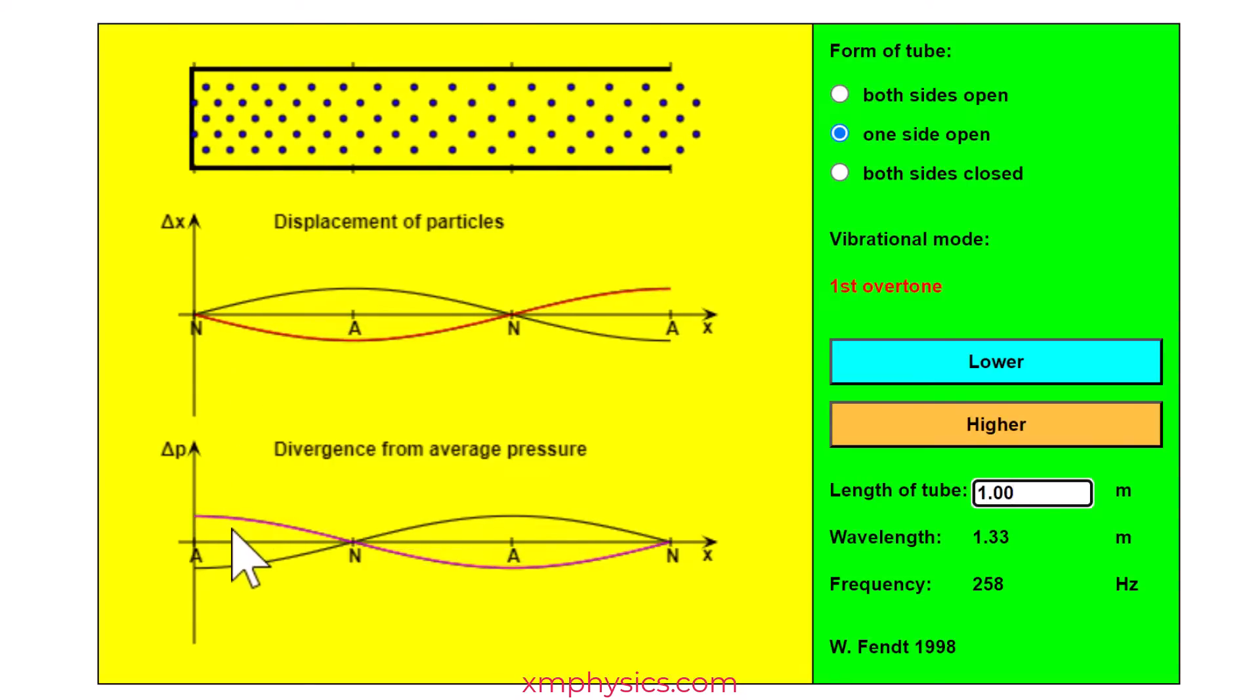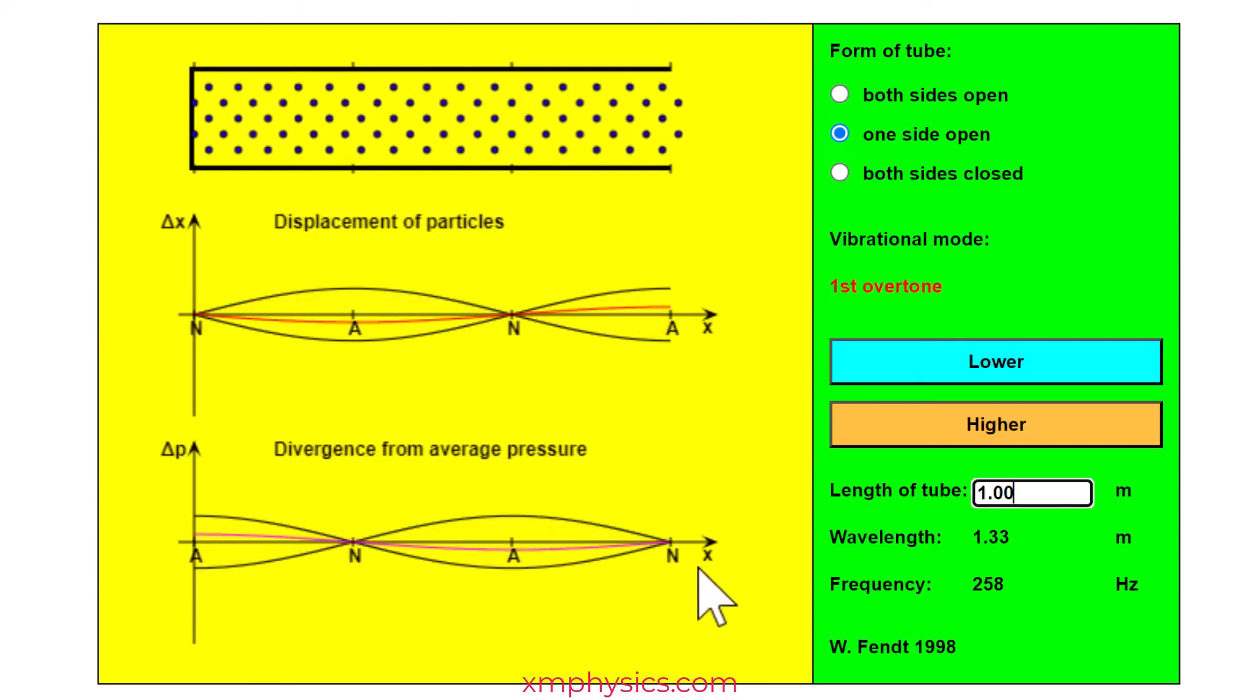So if you can remember this then the pressure is just the flipped version. So displacement node is pressure anti-node and displacement anti-node is pressure node.